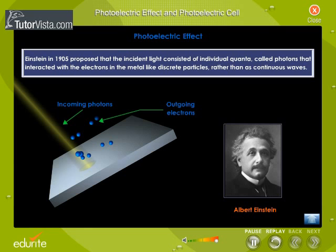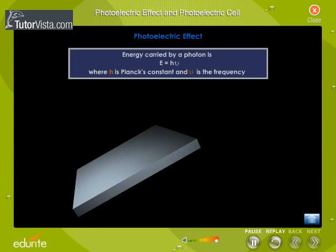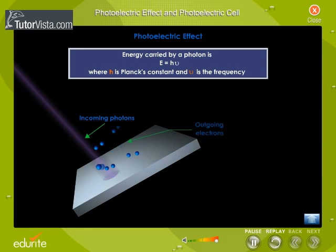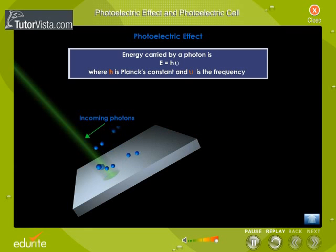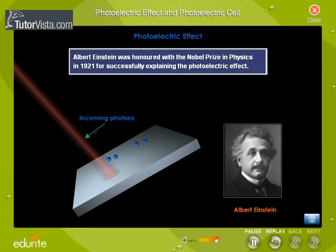Einstein in 1905 proposed that the incident light consisted of individual quanta called photons that interacted with the electrons in the metal like discrete particles rather than as continuous waves. For a given frequency or color of the incident radiation, each photon carried the energy E equal to hν, where h is Planck's constant and ν is the frequency. Albert Einstein was honored with the Nobel Prize in Physics in 1921 for successfully explaining the photoelectric effect.